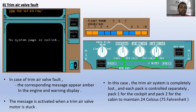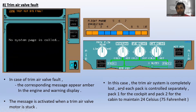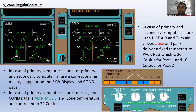In case of trim air valve fault, the corresponding message appears in amber on the engine and warning display: 'trim air system fault.' This message is activated when a trim air valve motor is stuck. In this case the trim air system is completely lost, and each pack is controlled separately — pack one for the cockpit, pack two for the cabin — to maintain 24°C.